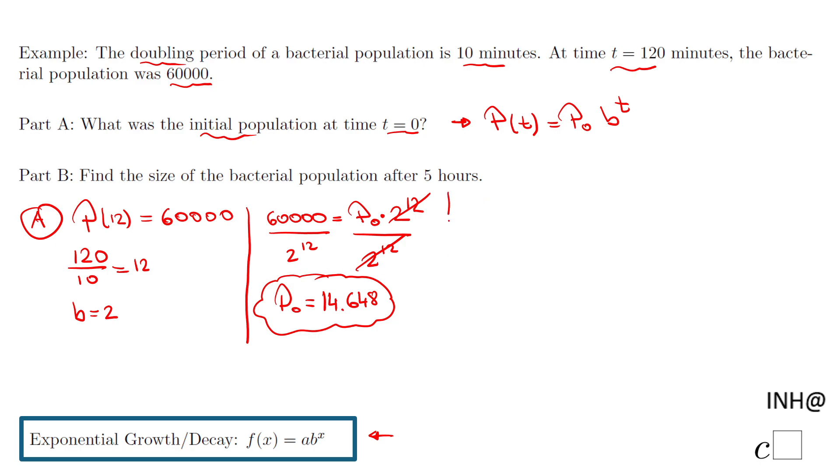where we need to find the population after 5 hours. First, you want to find out how many periods of 10 minutes are in 5 hours. Five hours means 5 times 60 minutes, which is 300 minutes. How many periods of 10 minutes do we have in 300 minutes? We divide 300 by 10, which is 30. That is how much t is in our case. I'm going to have P